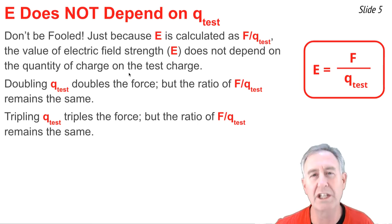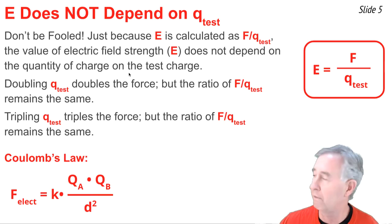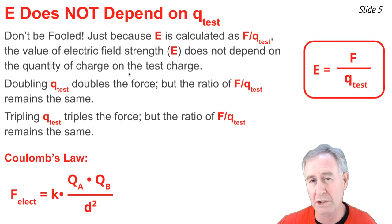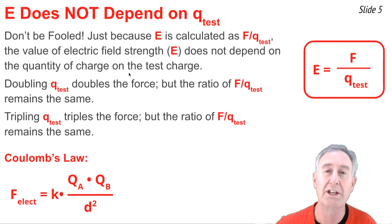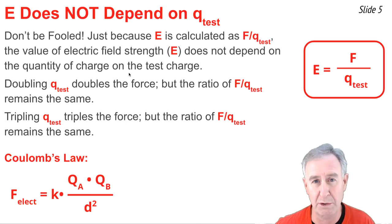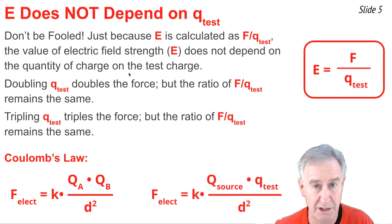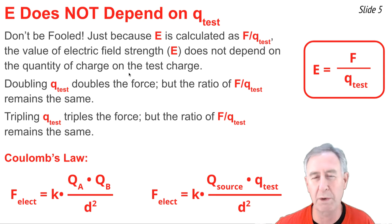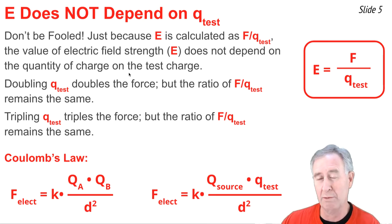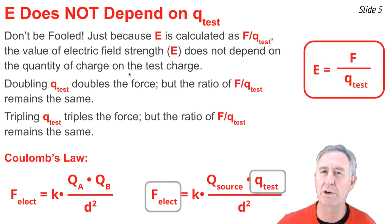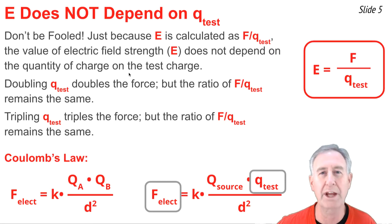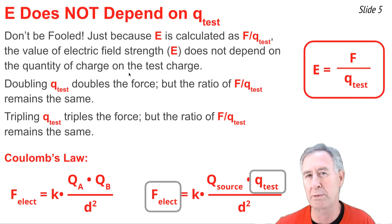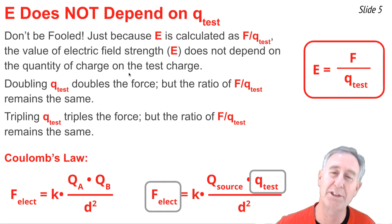To fully understand it, you need to understand Coulomb's law of force, which states that the force between the source charge and the test charge depends upon the q of the source, the q of the test charge, and the distance squared that separates them. If you were to double the q of the test charge, you would double the force, but the ratio of force per test charge would remain the same value.